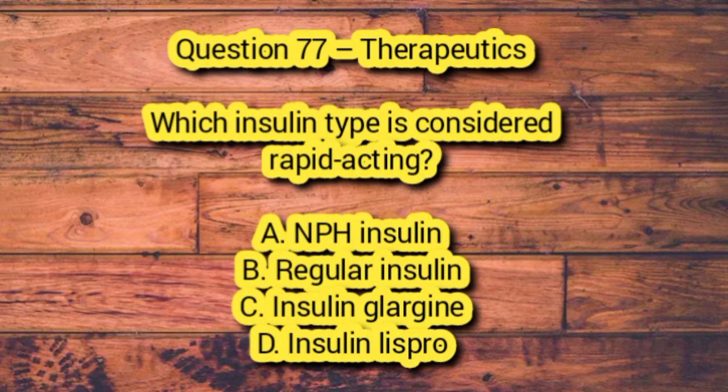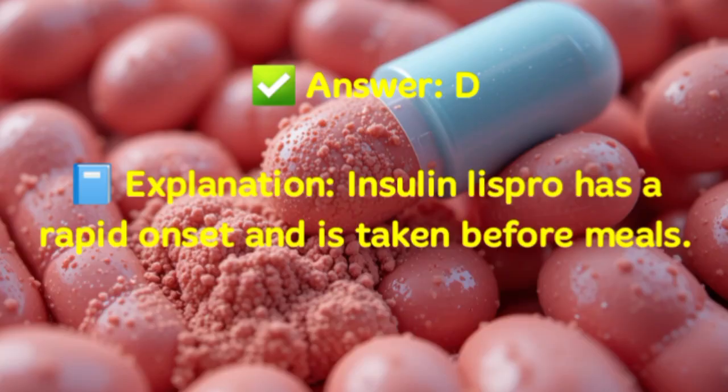Question 77 – Therapeutics. Which insulin type is considered rapid acting? A. NPH insulin. B. Regular insulin. C. Insulin glargine. D. Insulin Lispro. Answer: D. Explanation: Insulin Lispro has a rapid onset and is taken before meals.